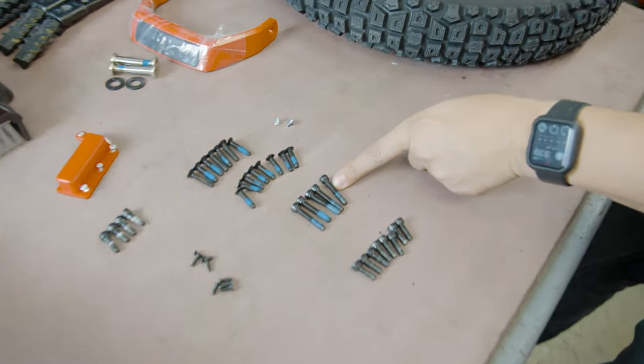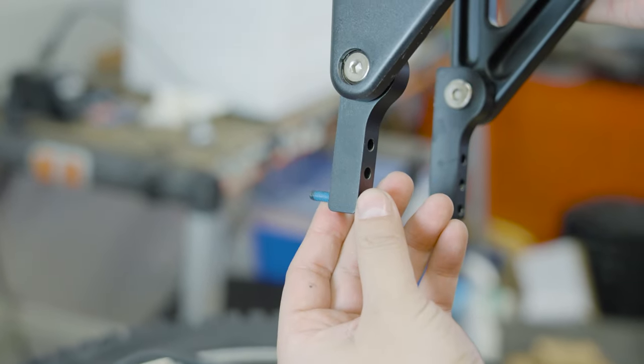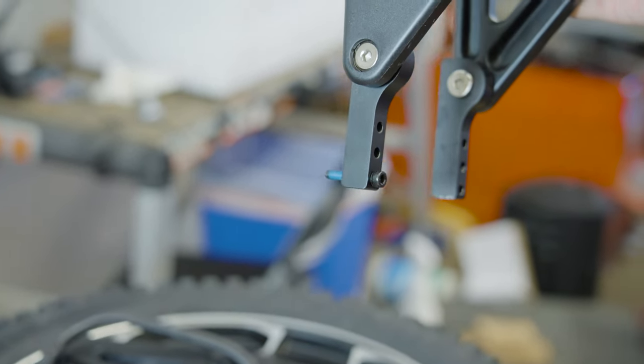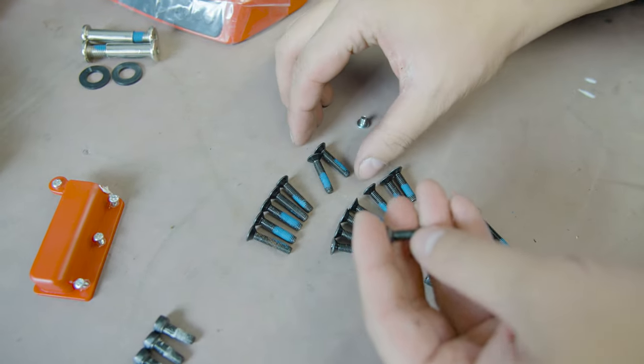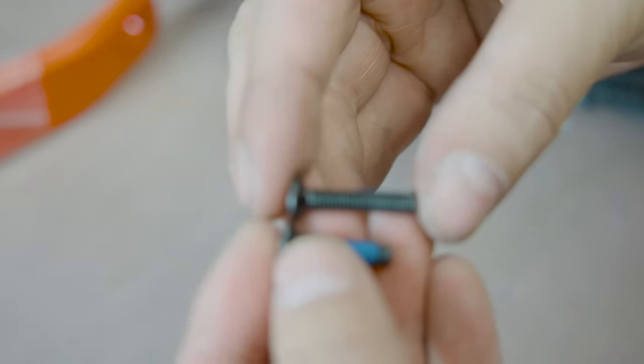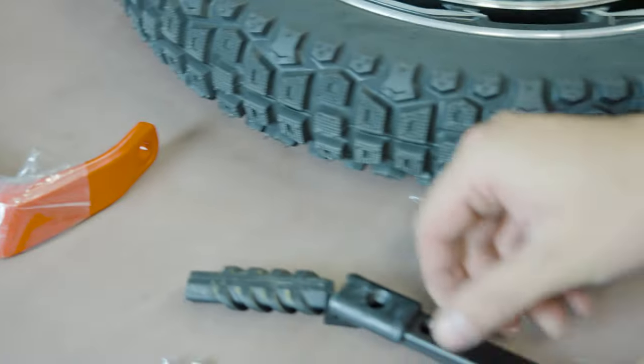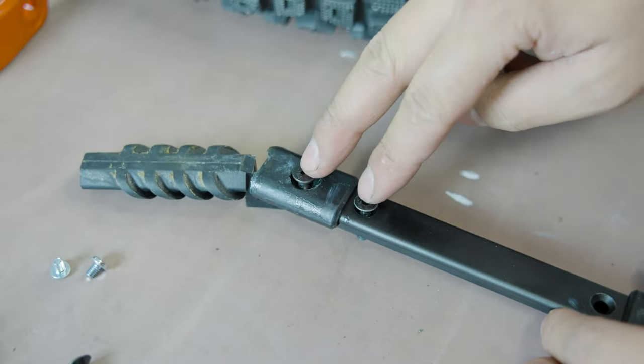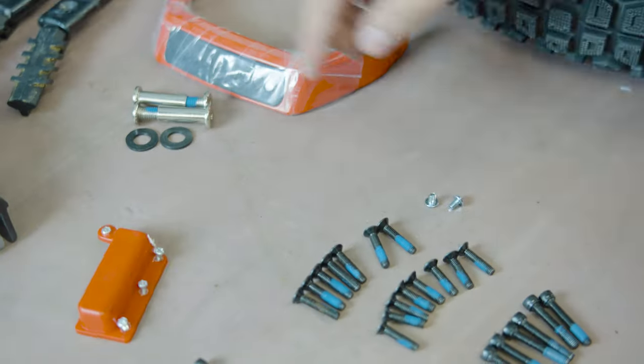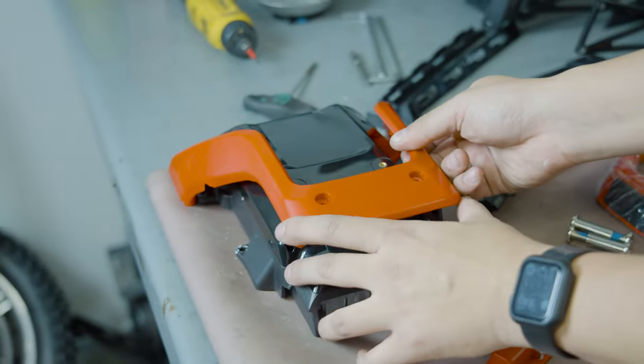So these long black ones here, these are the ones that go through the suspension that holds the motor to the entire frame. Then you have two sets of eight screws each. Like I said earlier, one of them is ever so slightly longer than the other. Those are for your sliders. So shorter screws in the slightly lower hole, longer screws in the top.